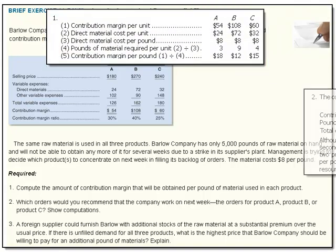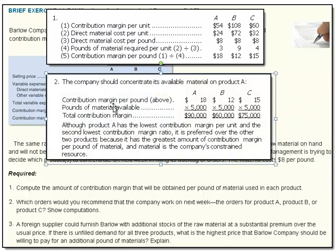The answer to number 1 gave us $18, $12, and $15 per pound. Although A has the lowest contribution margin per unit and the second lowest contribution ratio, it's preferred over the others because it has the greatest amount of contribution margin per pound of material. So we go in that order: making A would result in a contribution of $90,000, then $60,000 if we made B, and $75,000 if we made C. We should focus on making product A.